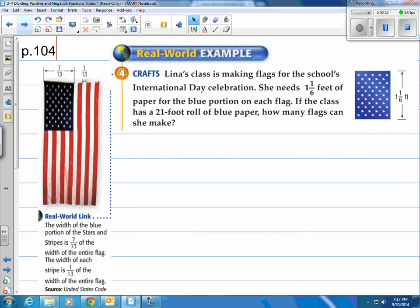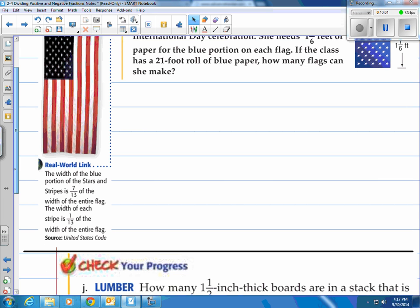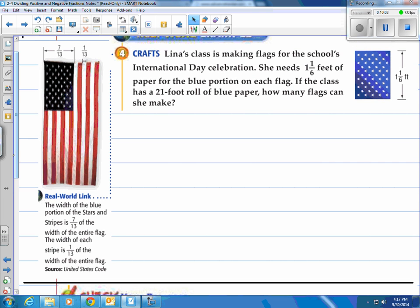Last one here. I learned a little bit here. This is the piece of information I even learned. I think it was two days ago when I read this. On the left there it says the real world length. The width of the blue portion of the stars and stripes is 7/13 of the width of the entire flag. The width of each stripe is 1/13 of the width of the entire flag. 13 colonies. That's the importance of the 13 in this story here.